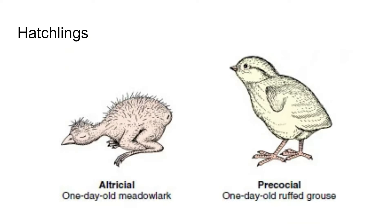Fertilization is internal, and birds lay amniotic eggs with hard calcareous (calcium carbonate) shells. Incubation of the young happens inside the egg, similar to reptiles. There are two kinds of hatchlings: altricial, like baby robins that are completely helpless and need to be fed by their parents, and precocial, like chickens, which are able to feed themselves soon after hatching. A baby chicken can start eating off the ground right after it's born, whereas a baby meadowlark, like shown here, can't do anything without its mother.